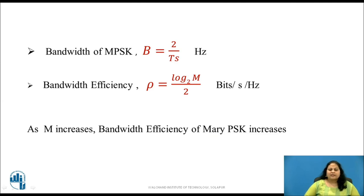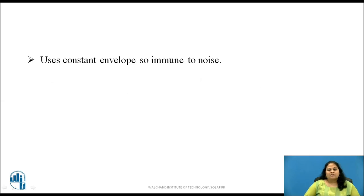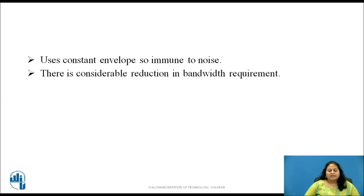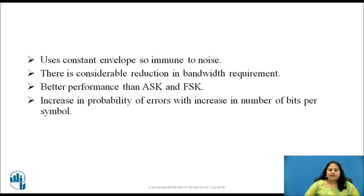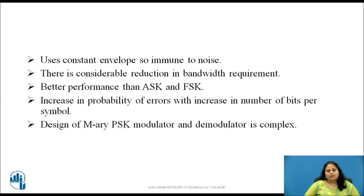The bandwidth of M-Ary PSK is given by B equals 2/Ts hertz. Bandwidth efficiency is given by ρ equals log base 2 of M divided by 2 bits per second per hertz. Thus, as M increases, bandwidth efficiency for M-Ary PSK increases. Since M-Ary PSK uses a constant envelope, it is immune to noise and there is considerable reduction in bandwidth requirement. It has better performance than ASK and FSK. However, there is an increase in probability of errors with an increase in the number of bits per symbol, and the design of M-Ary PSK modulator and demodulator is complex.